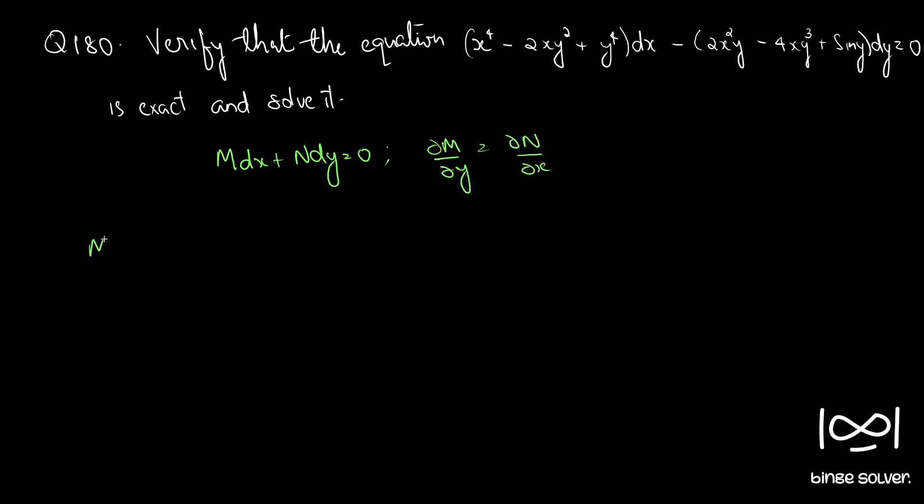So M here is x⁴ - 2xy² + y⁴, and N is -2x²y + 4xy³ - sin y.